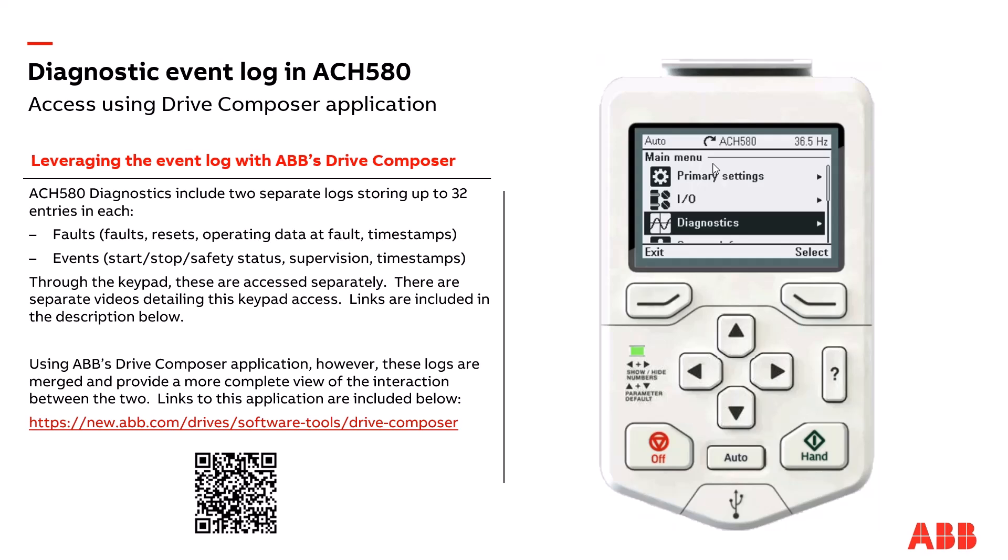The ACH 580 diagnostics includes two separate logs, each storing up to 32 entries. These are categorized as faults — there's a separate fault log that records whether there's a fault reset, the operating data occurring at the time of the fault, and most importantly, time stamps for every entry.